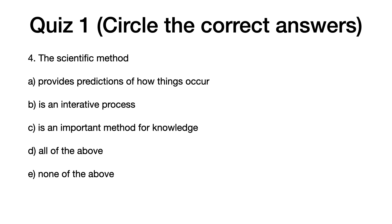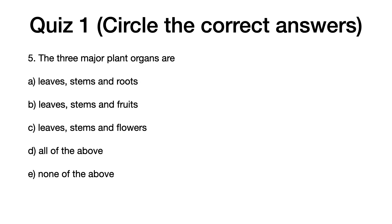Question four: The scientific method. A: provides predictions of how things occur. B: is an iterative process. C: is an important method for knowledge. D: all of the above. E: none of the above. The correct answer is D, all of the above.